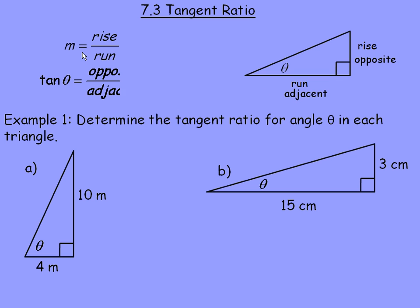Another symbol for slope is the tan of the angle theta. Slope and tan of angle theta mean exactly the same thing, so opposite over adjacent is equivalent to slope is rise over run. This terminology is from trigonometry: the tan of an angle is defined to be the opposite side divided by the adjacent side in any right triangle, and that's how you calculate the tan of any angle.